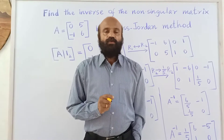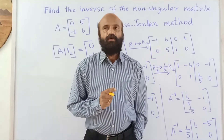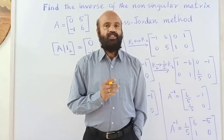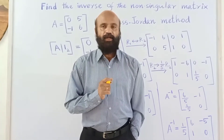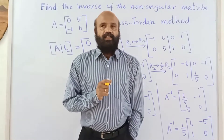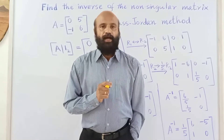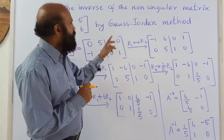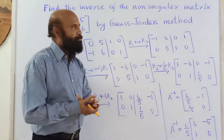We have already learned how to find the inverse of a matrix using the relation: A inverse equals adjoint of A divided by determinant of A. But there is another method to find the inverse of a matrix, and that method is known as the Gauss-Jordan method.